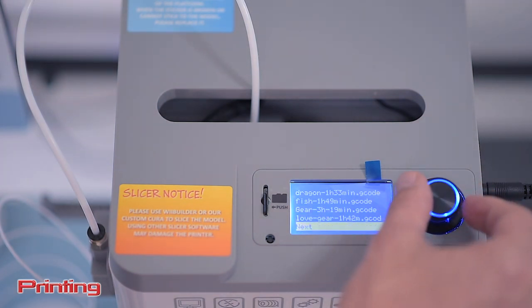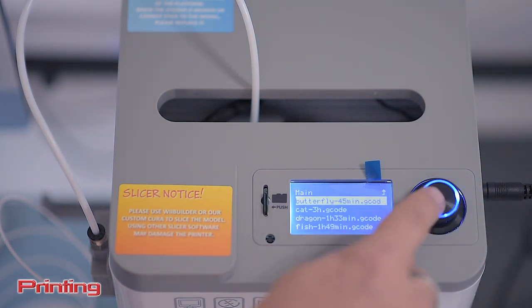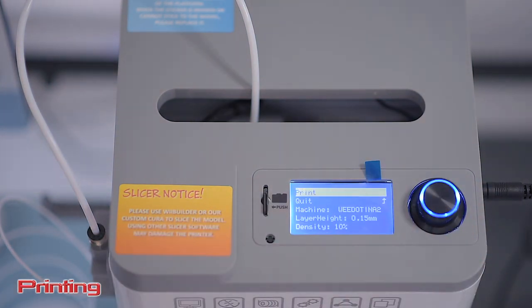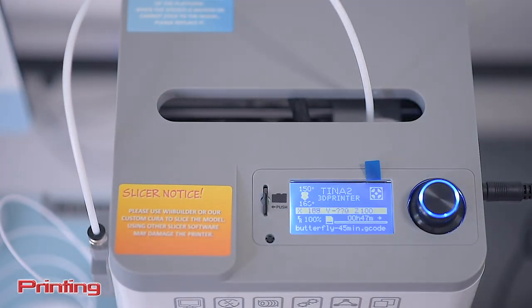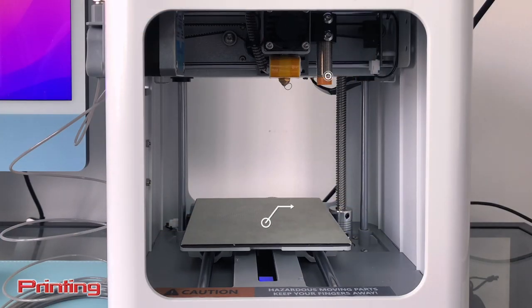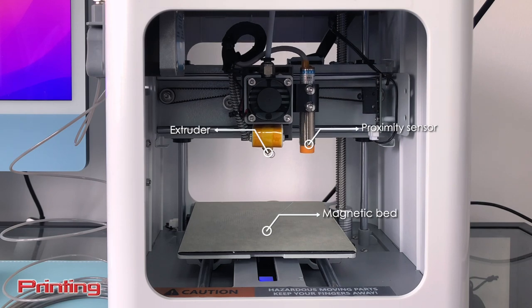After selecting the file, the display shows you settings for the print such as density, layer height, and temperature. Click print and the WEDO TINA2 goes through its automatic bed leveling. It has a little proximity sensor next to the extruder so the printer knows the position of the magnetic bed and the extruder won't go any lower than the bed.